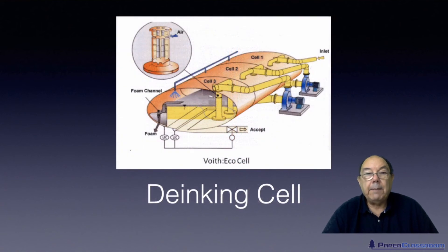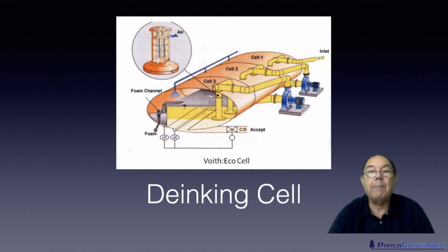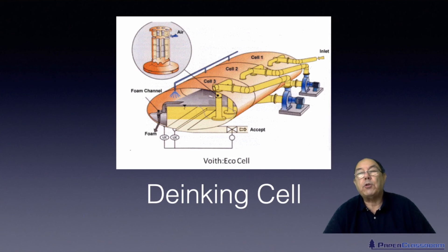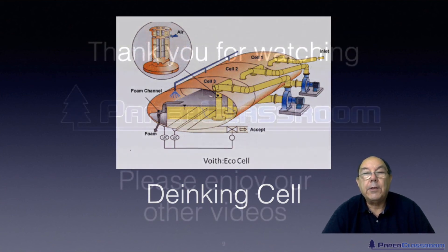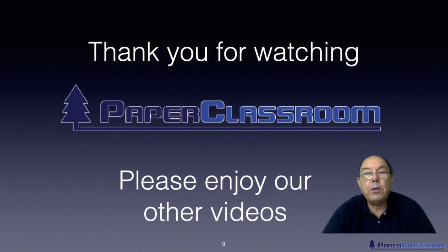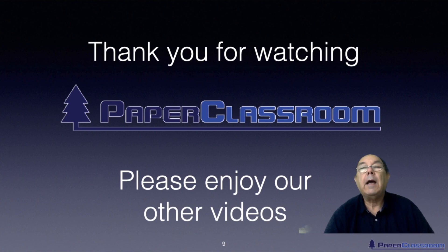Finally, there are materials much tinier than anything discussed so far - ink particles. In order to get rid of ink particles you would use something like a de-inking cell. I'm just mentioning it here but we'll talk about it in more detail later in the series. Thank you for watching this video, I hope you enjoyed it, please feel free to comment, and we look forward to seeing you in future videos.